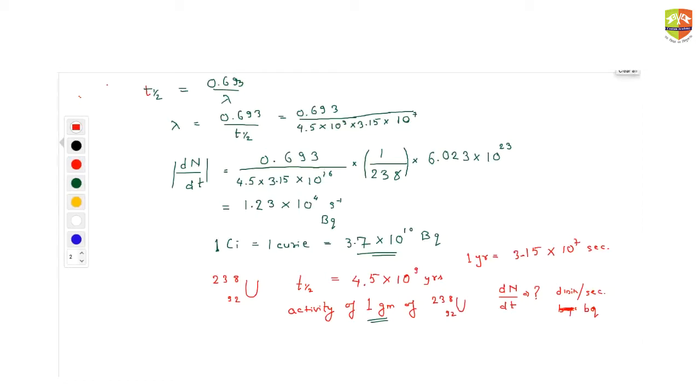So now there is one more important concept in radioactivity, which is average life. For example, recently there was an article in Times of India, where the average life of Indians is found out to be around 68 or 69. So how they calculate that average life?